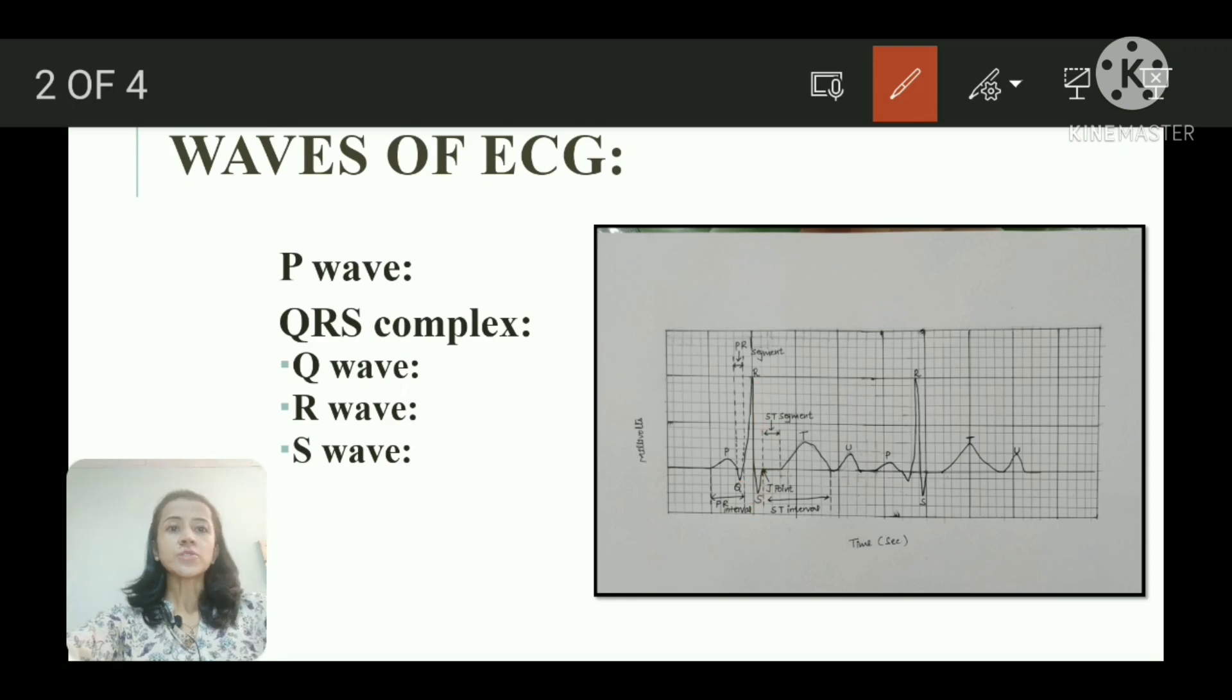Duration of QRS complex is from beginning of Q wave to the end of S wave. Normal duration of QRS complex is 0.08 to 0.12 second. When the duration is more than 0.12 second, it indicates heart block.